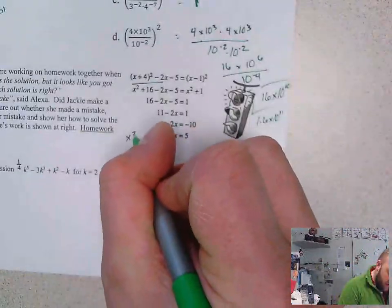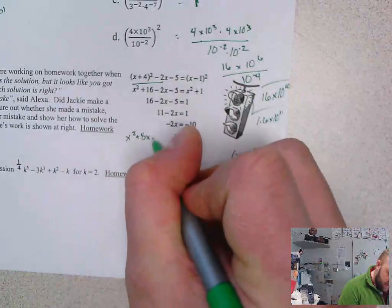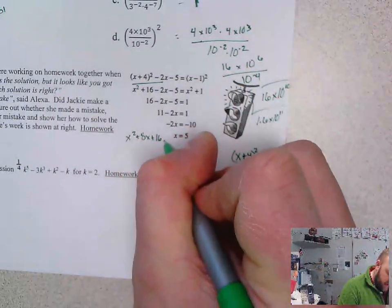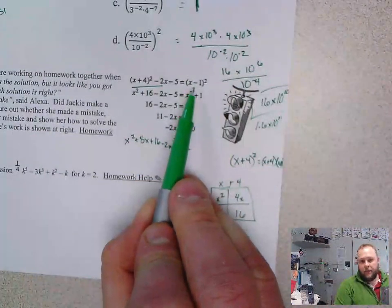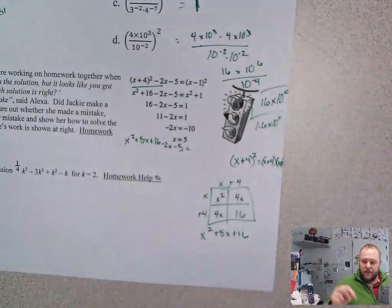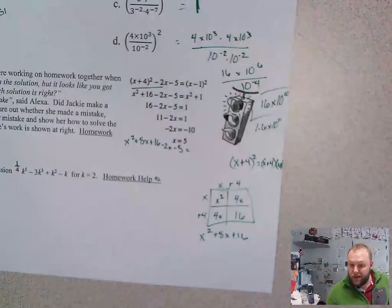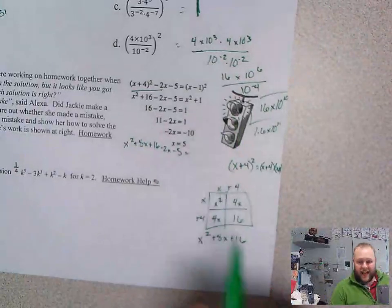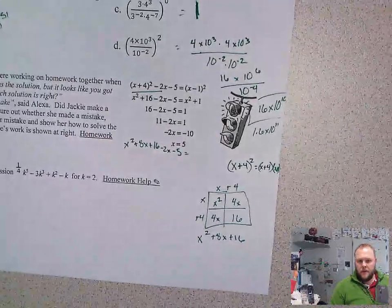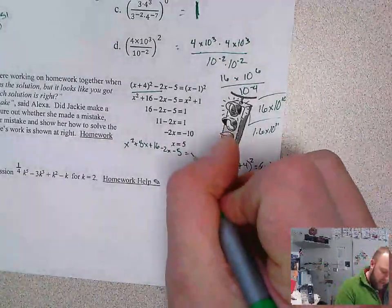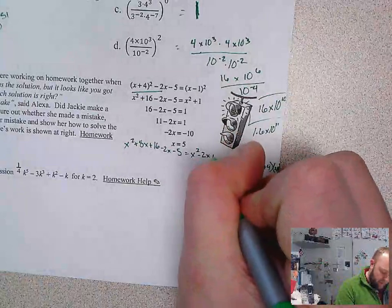So that would be x squared plus 8x plus 16 minus 2x minus 5 equals... We run into the same thing over here. Pause the video right now and use the area model to multiply x times x minus 1. You should have gotten x squared minus 2x plus 1.